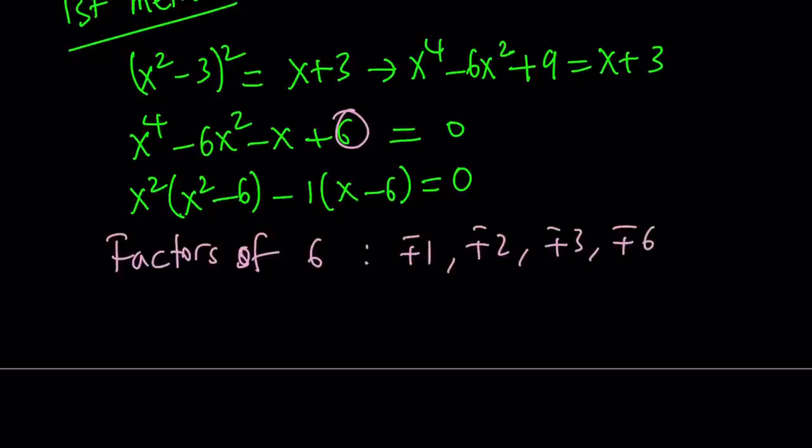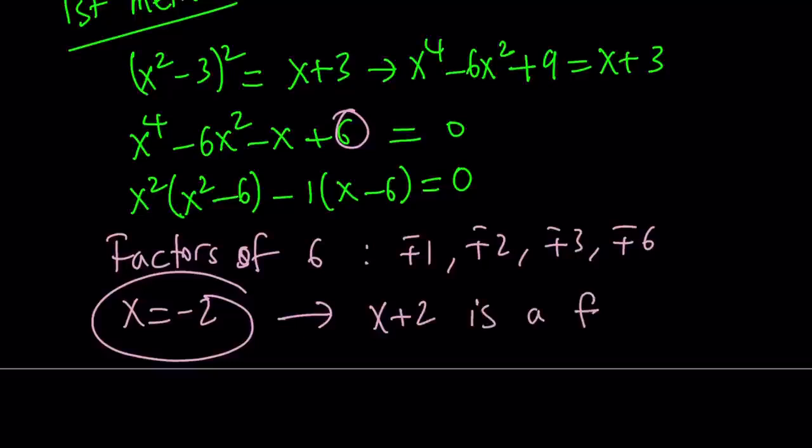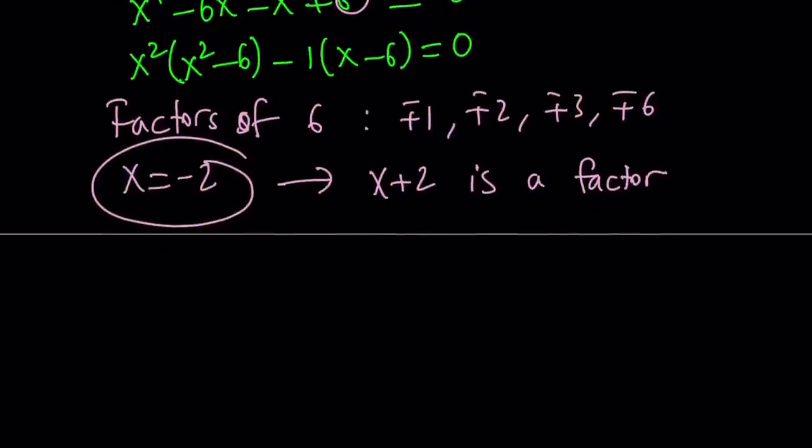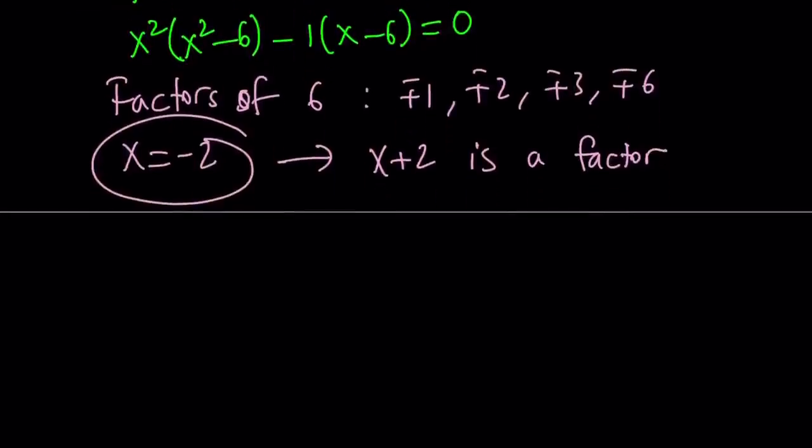But guess what? To keep a long story short, I'm going to tell you what it is. x equals negative 2 works. Yeah, awesome. And you can easily check that. This implies that x plus 2 is a factor. This is the factor theorem. Because in order for x equals negative 2 to be a solution, we have to have x plus 2 equals 0. So that means x plus 2 is a factor.